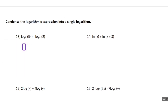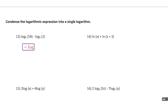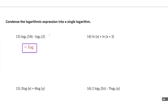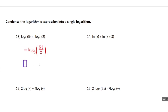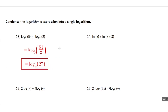For number 13 we want to combine these using the quotient property, and we'll get log base 8 of 54 over 2. Since I can actually divide 54 by 2, I might as well go ahead and do that — it's going to be 27. And 27 is not a power of 8, so we'll just leave it as log base 8 of 27.